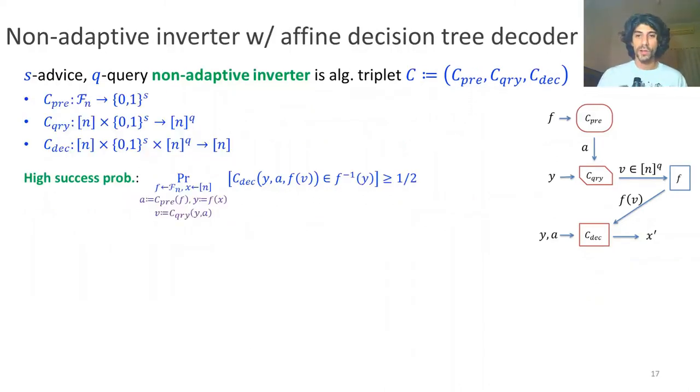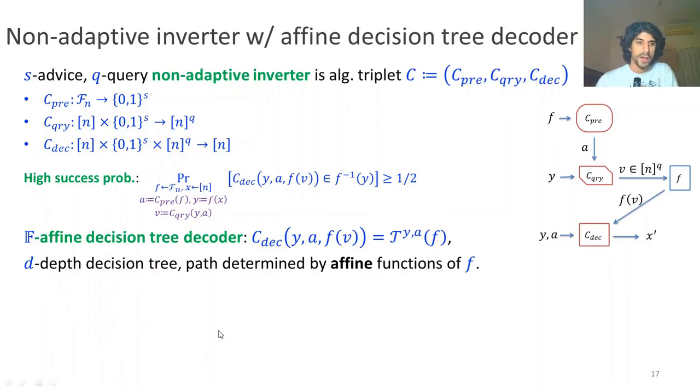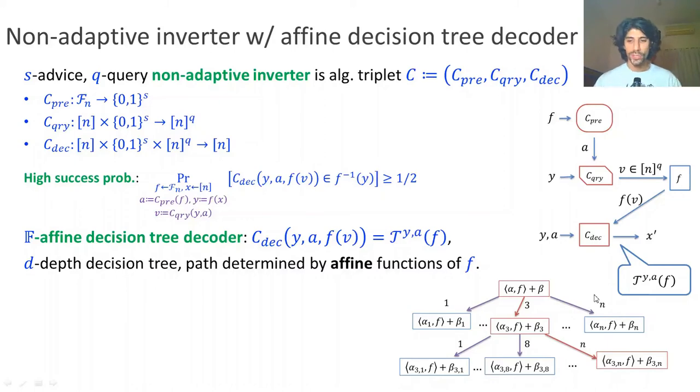On to our final result, which is similar to the previous one except a slightly more advanced decoder. Here, our decoder is not an affine decoder but rather an affine decision tree decoder. This time, for any given y and a, the decoder outputs a function which behaves like a decision tree over values of f, over affine functions of f. For example, you can see here a toy decision tree. The path is determined by the values of affine functions of f, and these functions, these alphas and betas, are all determined uniquely by y and a.